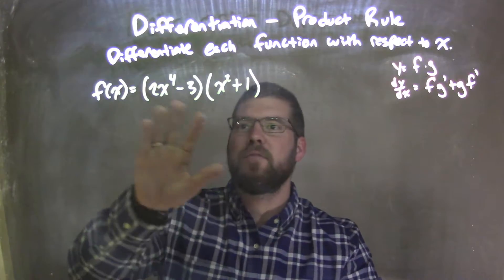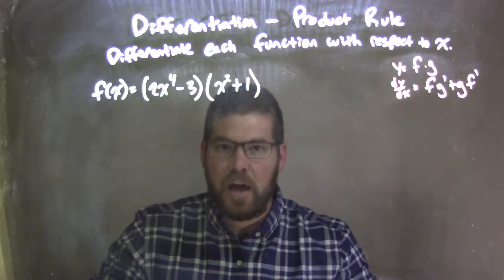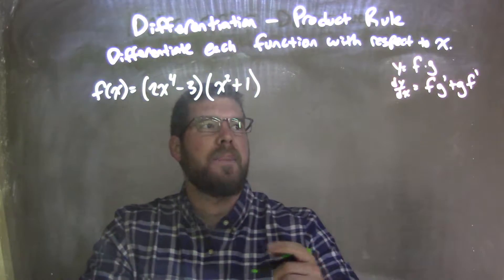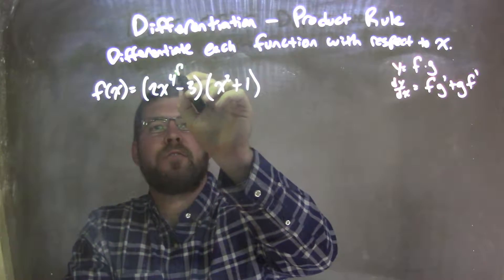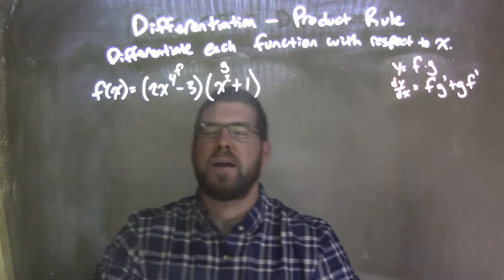Well, to apply the product rule, we have two functions that we're multiplying together. Our two functions here, what we can label is f and g. So I'm going to label this one f, and this one my g, my second one.